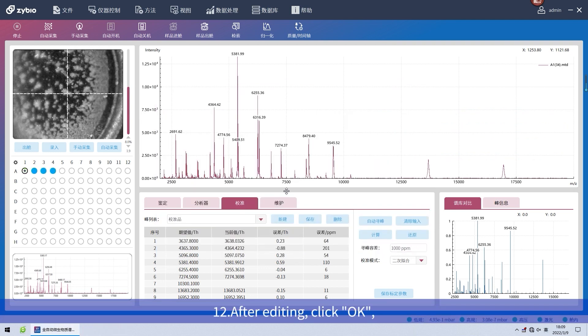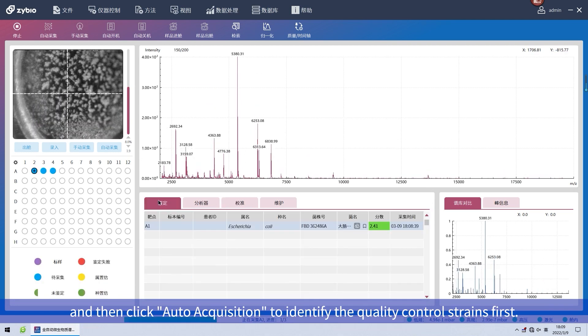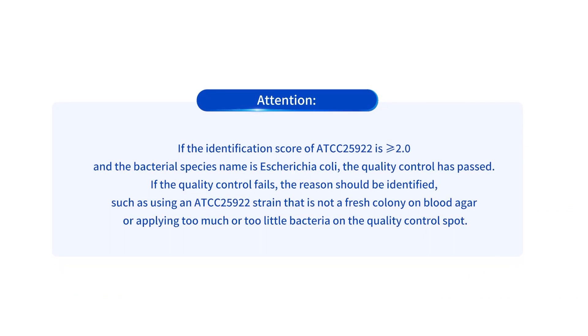Twelfth, after editing, click OK and then click auto acquisition to identify the quality control strains first. If the identification score of ATCC 25922 is greater or equal to 2.0, and the bacterial species name is Escherichia coli, the quality control has passed. If the quality control fails, the reason should be identified, such as using an ATCC 25922 strain that is not a fresh colony on blood agar or applying too much or too little bacteria on the quality control spot.